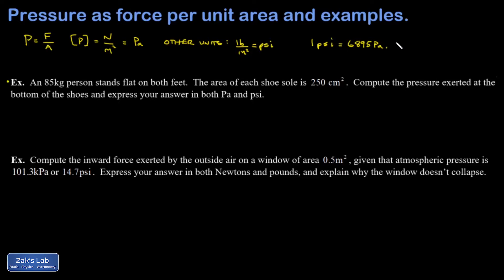All right, let's look at our first example. We have an 85 kilogram person standing flat on both their feet. We're given the area of the soles of their shoes. There's two of these, so we're going to have a total area of 500 square centimeters. And we want to compute the pressure exerted at the bottom of their shoes and express our answer in Pascals and PSI. So we've got to get a person in here.